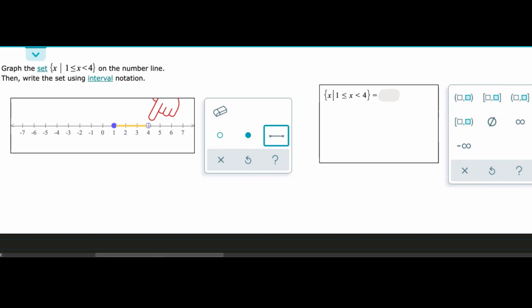So we know that our x is going to be between 1 and 4 because it has to be greater than or equal to 1 and it has to be less than 4.